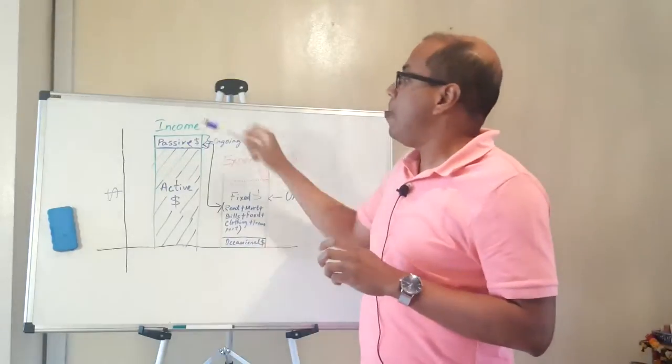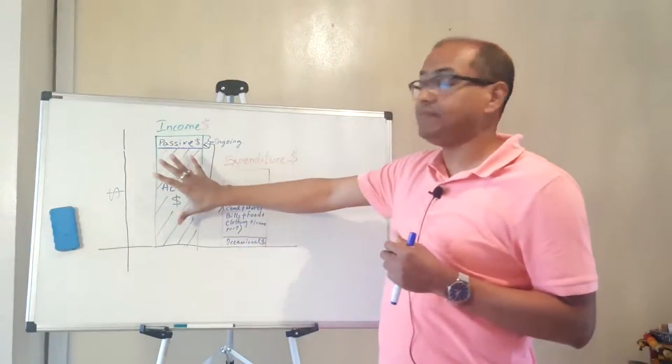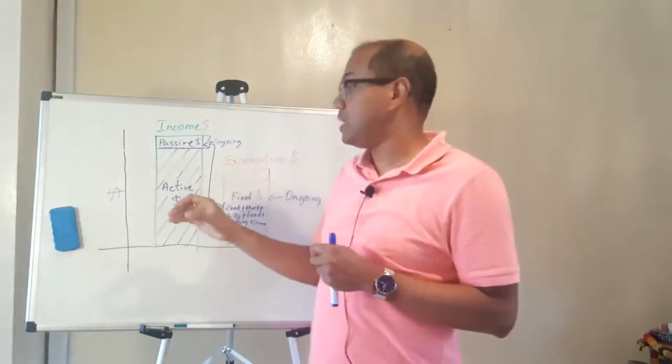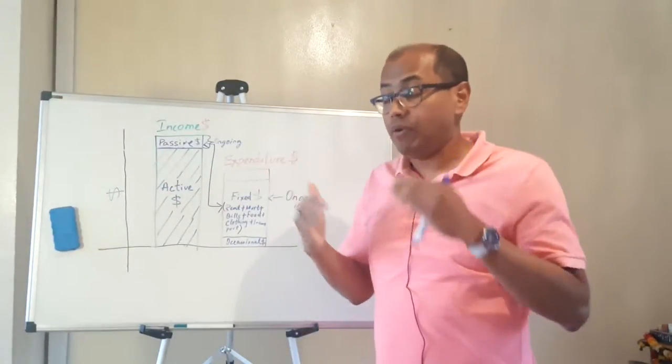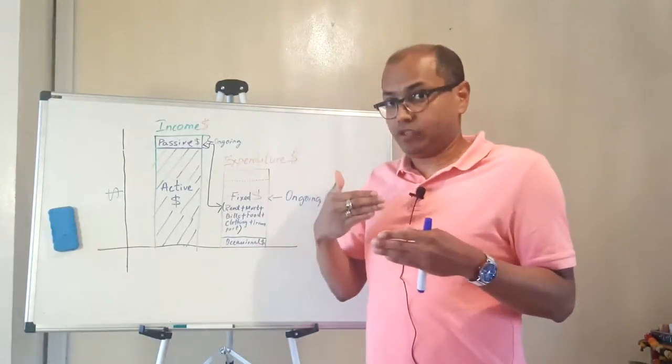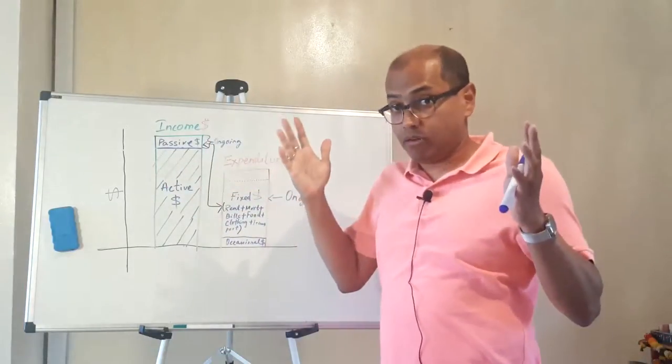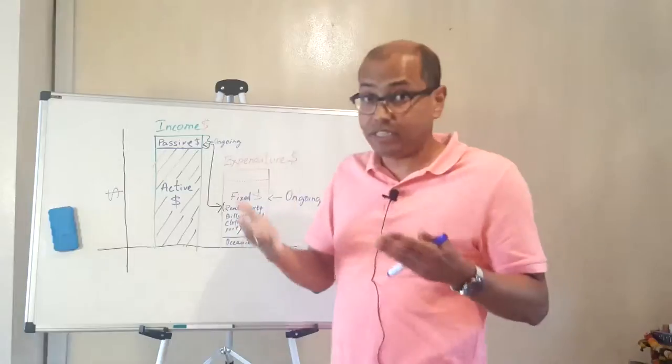How can you be financially free? It's very simple. Let's analyze our income. Our income constitutes two different segments: one is active income, another is passive income. Active income is when you work, so you trade your hours for money. If you stop working, you are not paid. That's active income based on your activity.